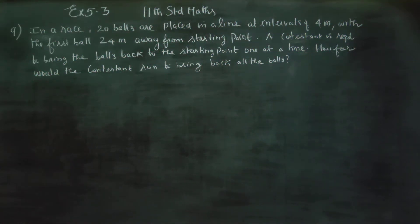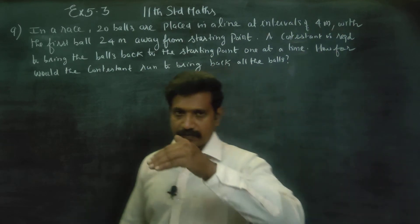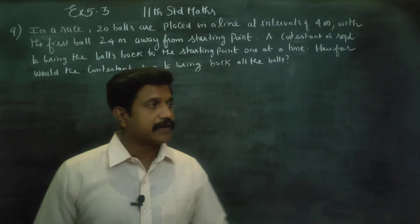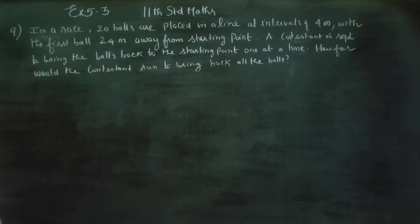Dear Learn Standard students, in exercise number 5.3, sum number 9: in a race, 20 balls are placed in a line at intervals of 4 meters.